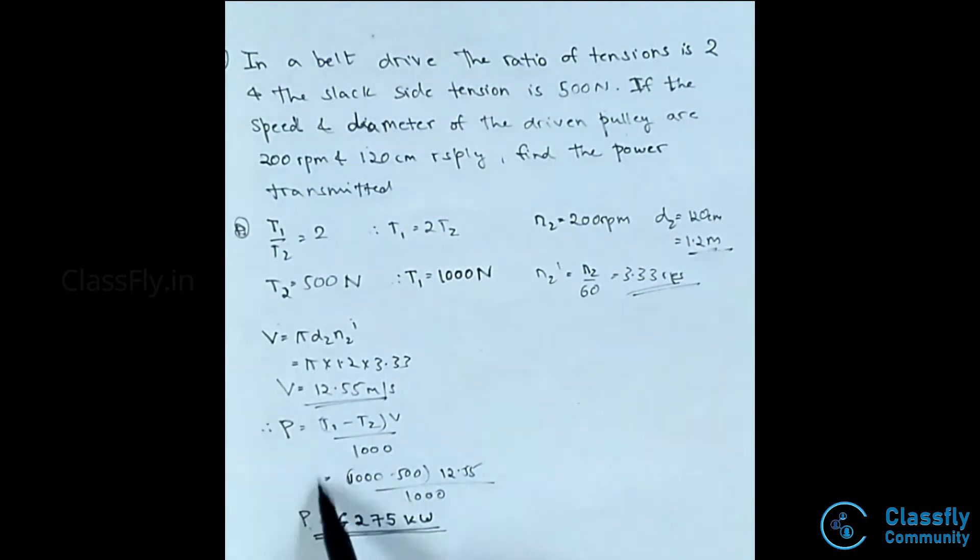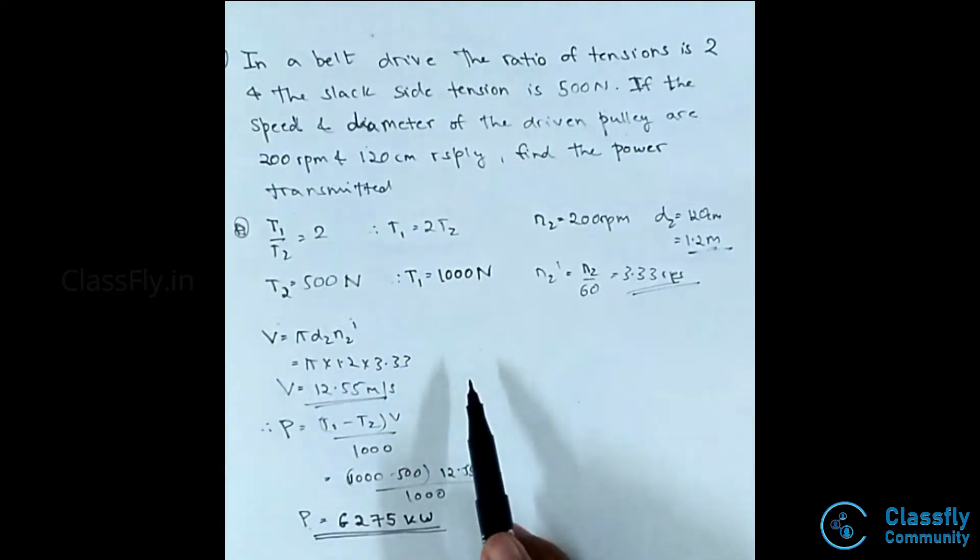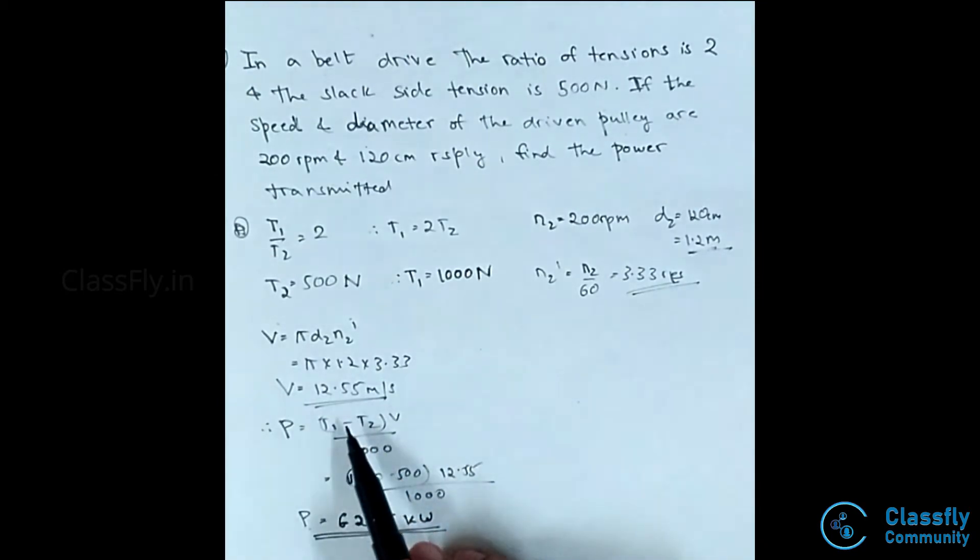Now, power transmitted in a belt drive is given by the formula (T1 minus T2) times V divided by 1000. Substituting the values: (1000 minus 500) times 12.55 divided by 1000. From this, we get the power transmitted is 6.275 kilowatts.